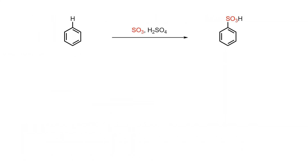In summary, while benzene is stable and reluctant to react, it is able to undergo electrophilic aromatic substitution with SO₃ in the presence of concentrated sulfuric acid to produce benzenesulfonic acid.